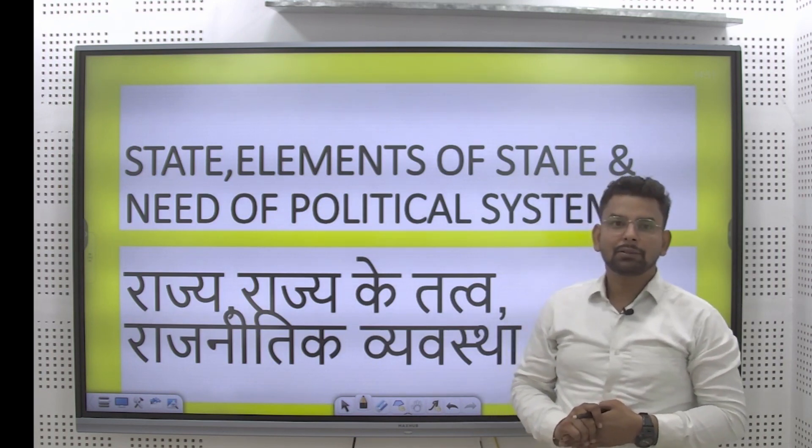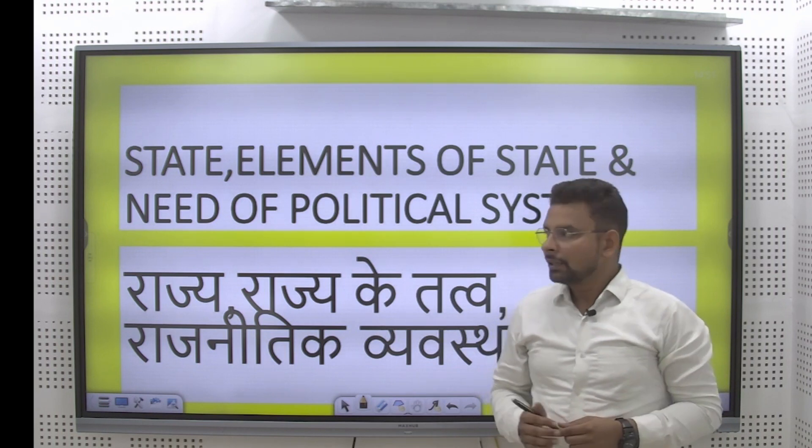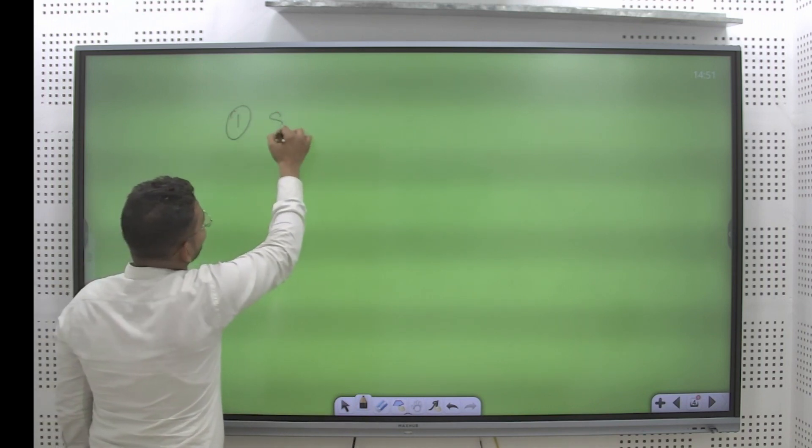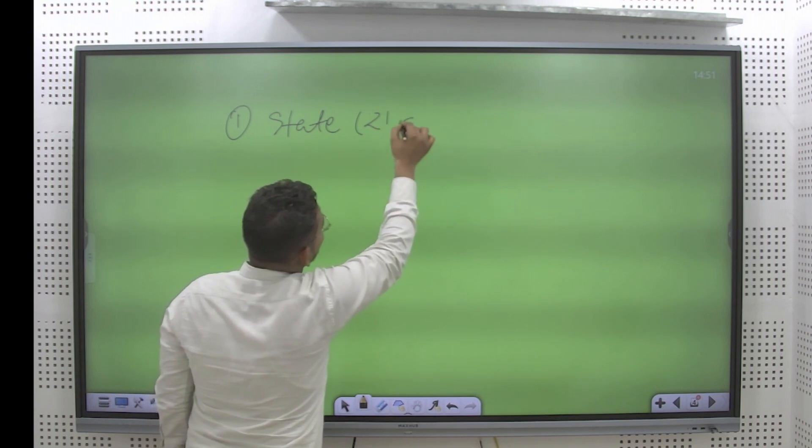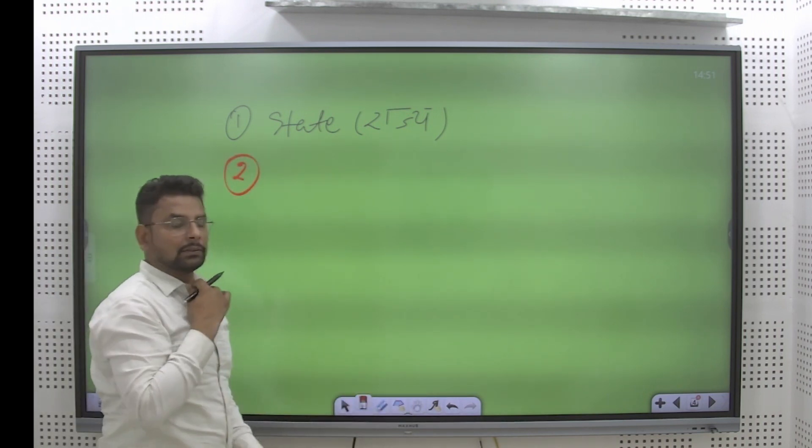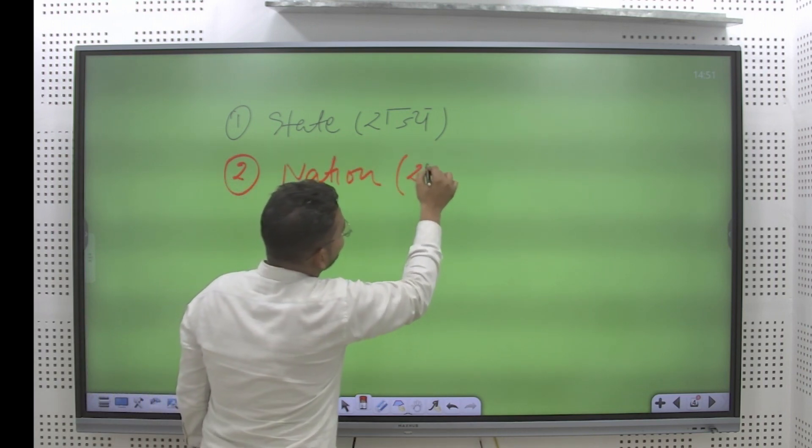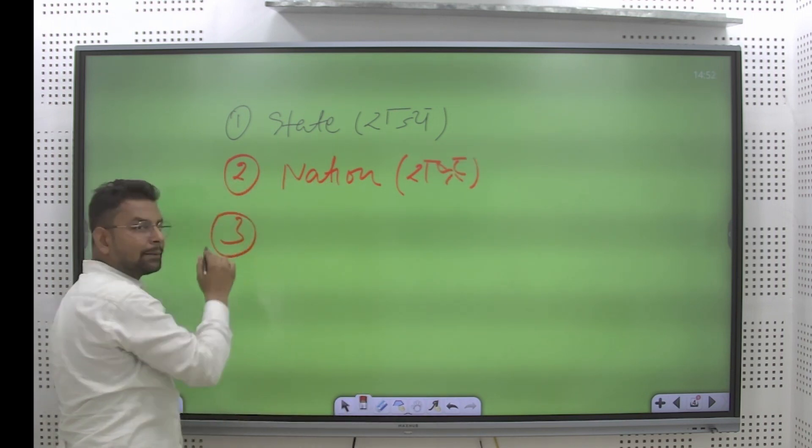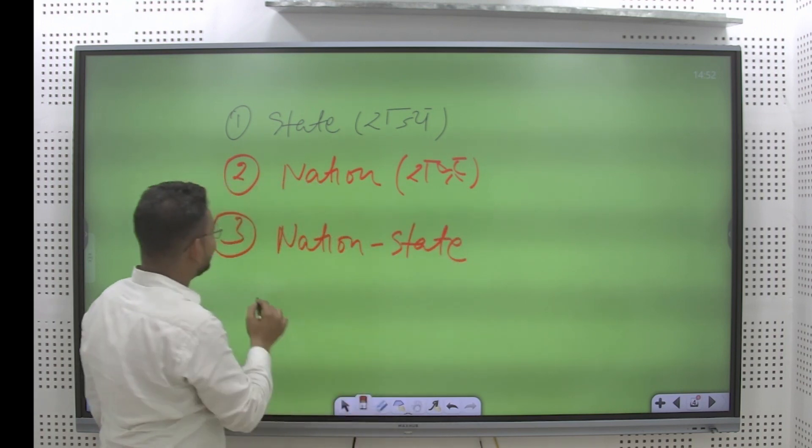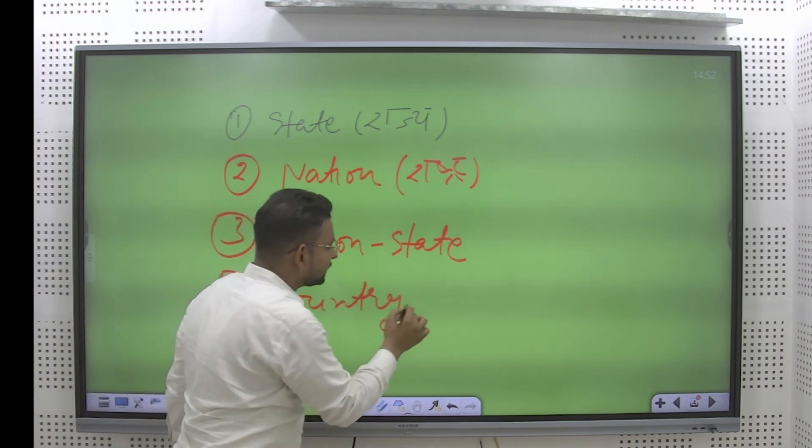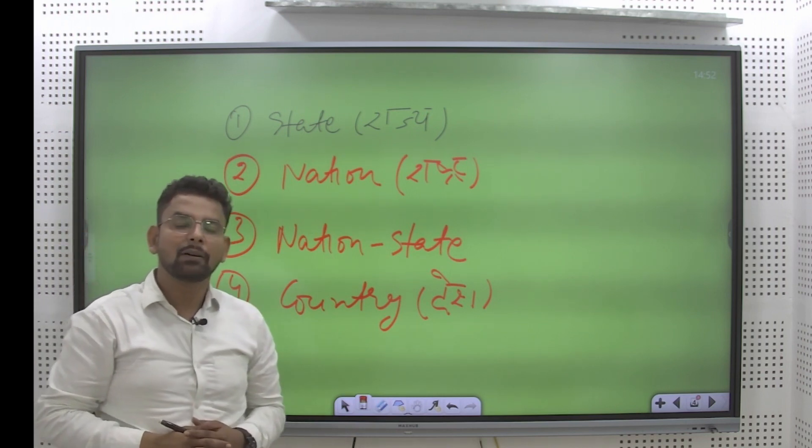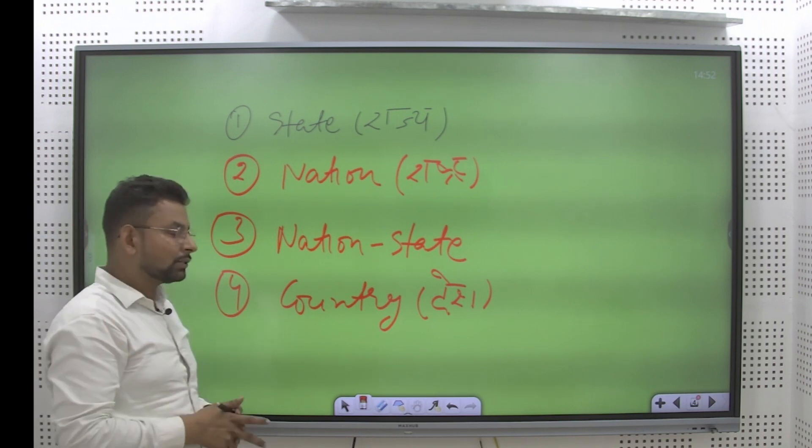The first and foremost part that we are going to discuss in this lecture will be the state. Students, apart from the state, there are certain other elements that will be part of this lecture series. Number one will be the state, jisko basically hum rajya ke naam se bhi jante hain. Second in the list will be nation, jisko hum rashtra ke naam se bhi jante hain. Third concept that we are going to discuss will be nation-state. And thereafter, the fourth concept will be the country. Dear viewers, we will try to analyze the technical differences among all these four keywords and concepts. Now let us start with the state.